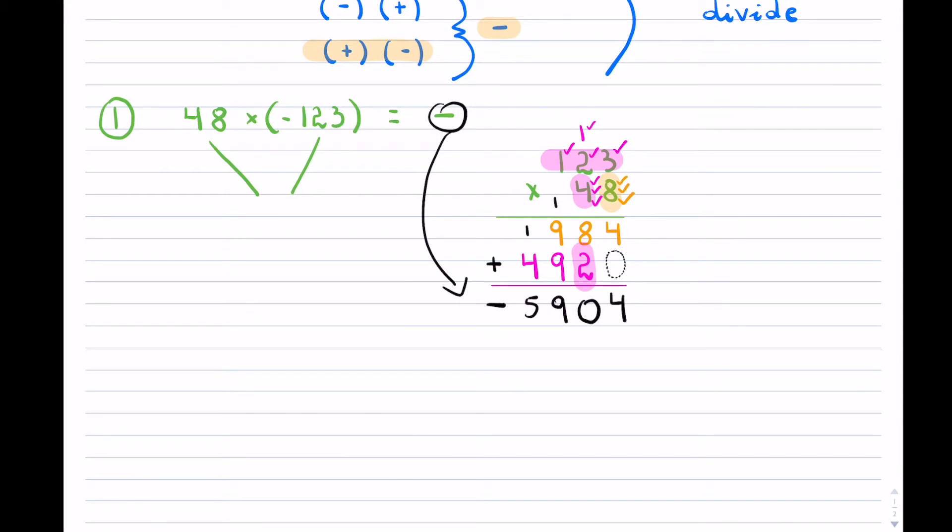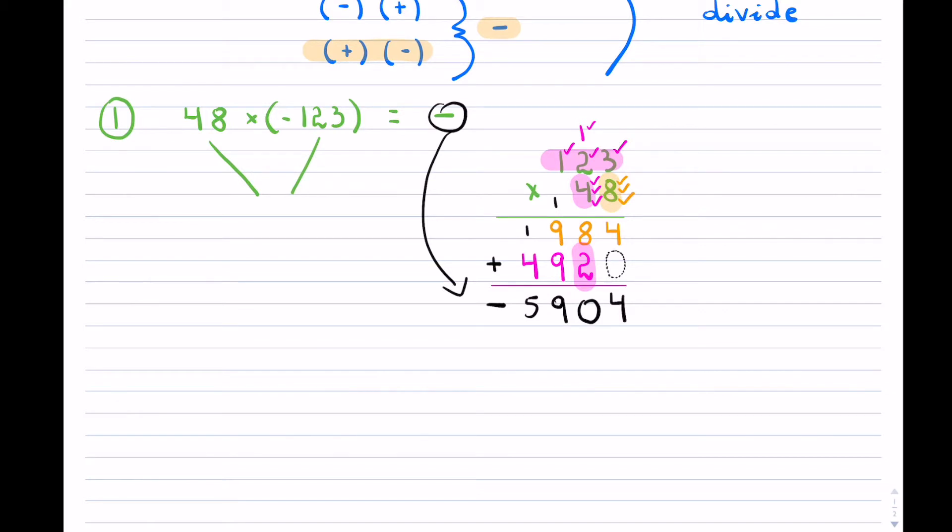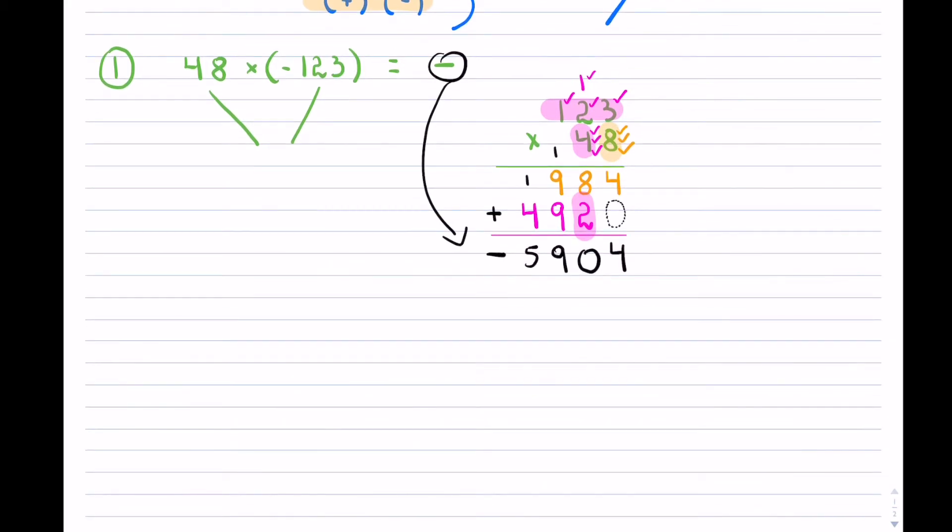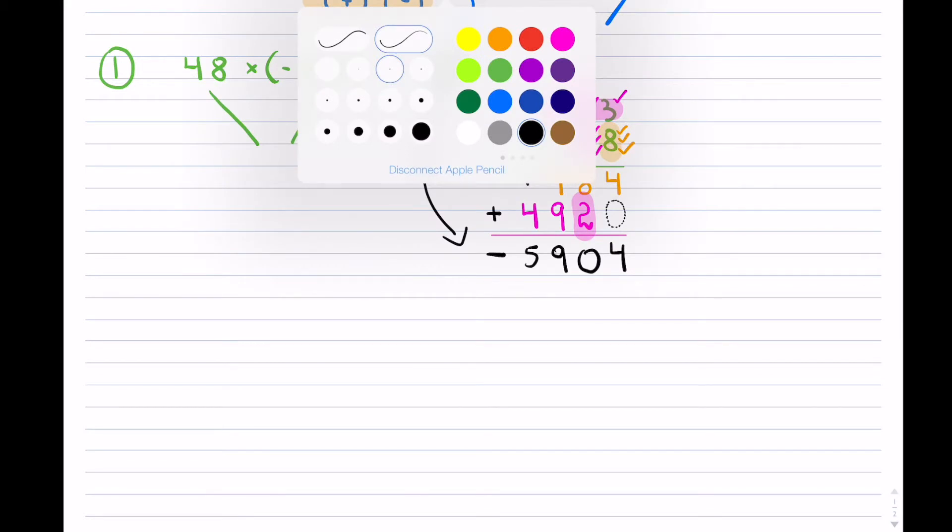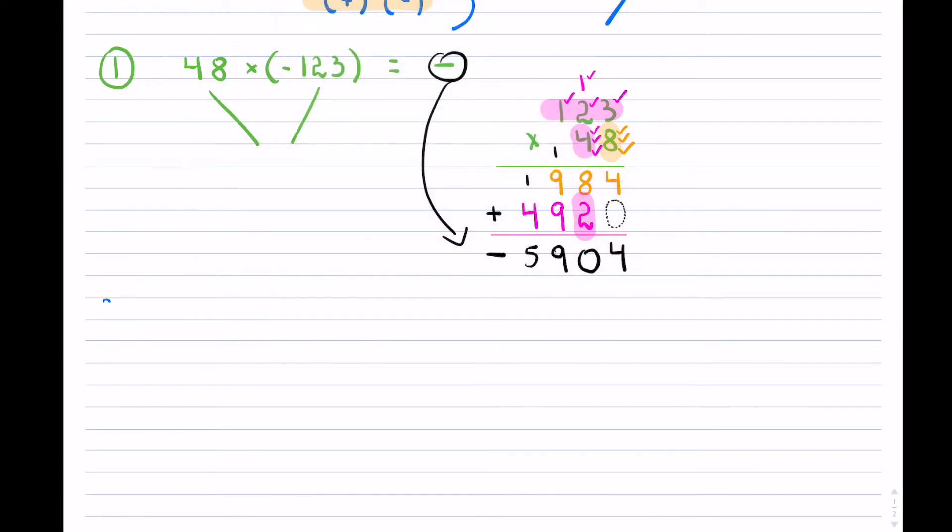Let's take a look at another example. Hopefully that will kind of refresh the process. This is example number 2. And we can make the example even a little bit bigger. Let's say now we have negative 376 multiplied by negative 499.